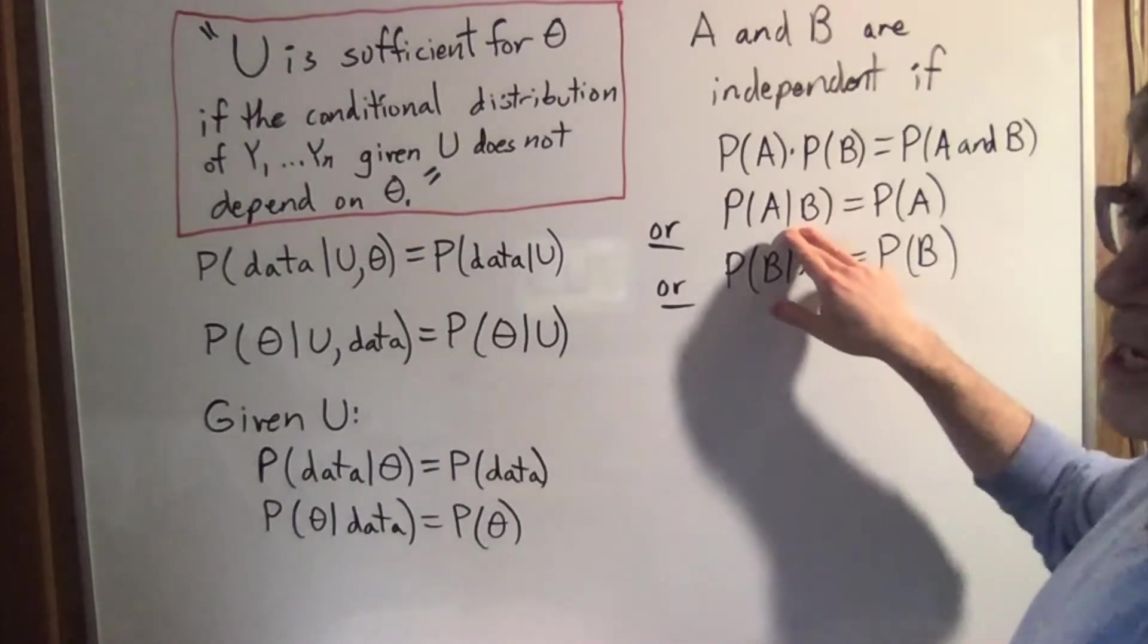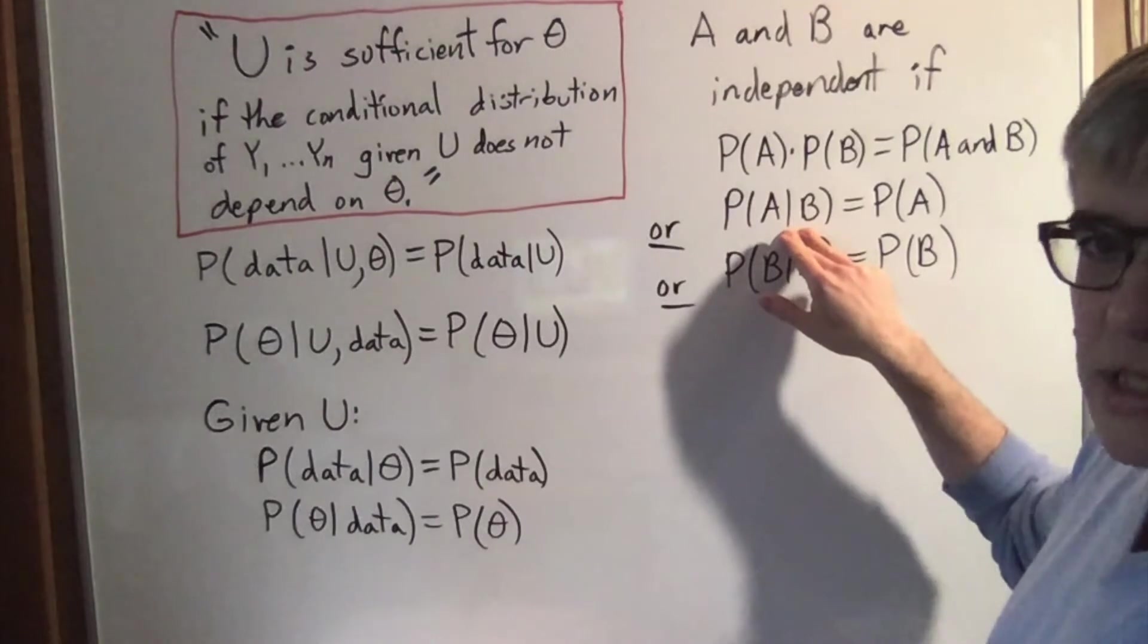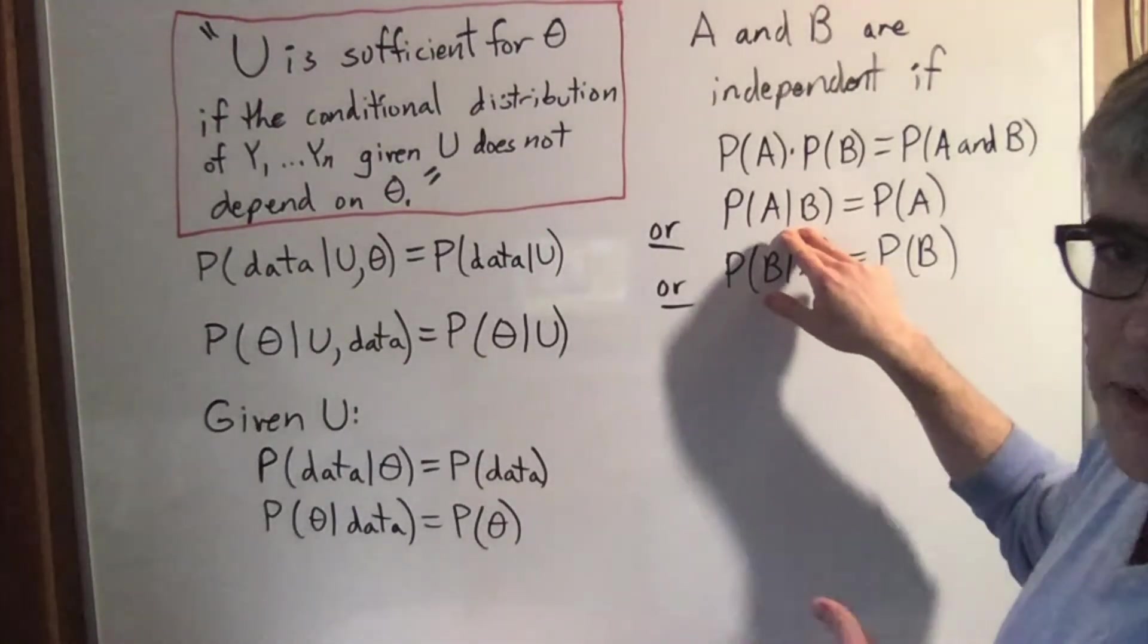It's like, I rolled a die. What's the chance it's a three? One-sixth. Okay, it's cloudy out. Now what's the chance that it's a three? Still one-sixth because being cloudy has absolutely nothing to do with the roll of the die.